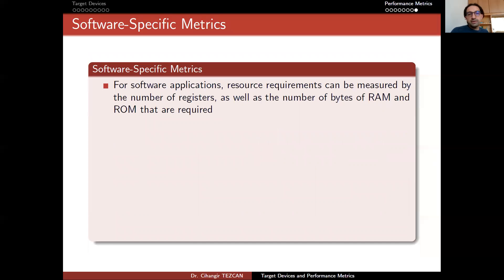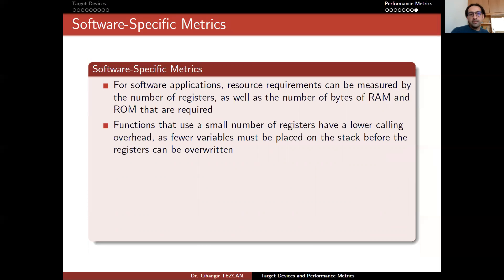For software applications, let's move on to software-specific metrics. Resource requirements can be measured by the number of registers as well as the number of bytes of RAM and ROM that are required. Functions that use a small number of registers have a lower calling overhead, as fewer variables must be placed on the stack before the registers can be overwritten.